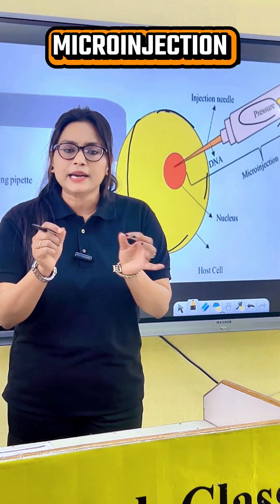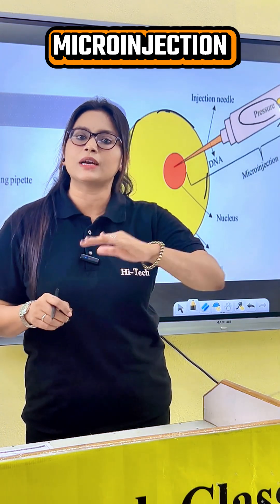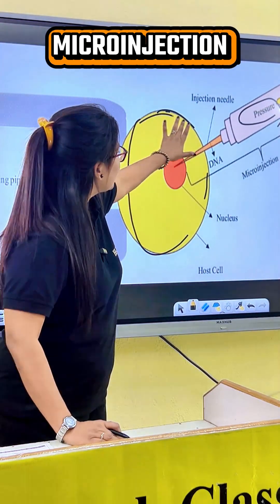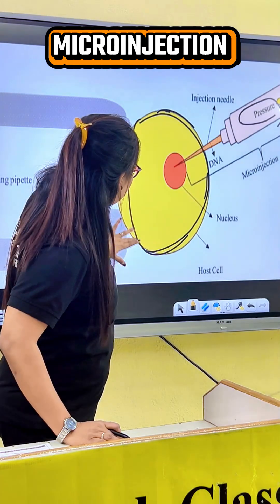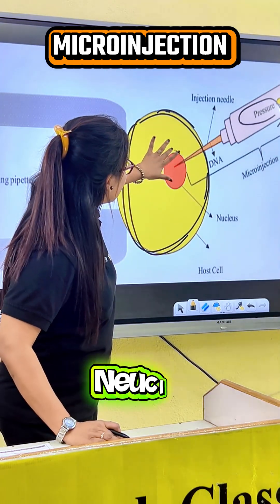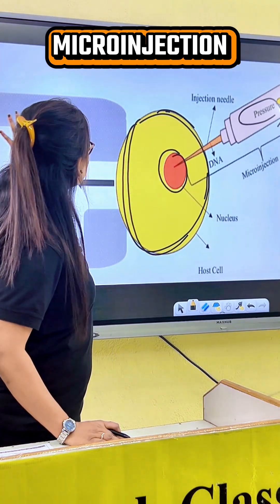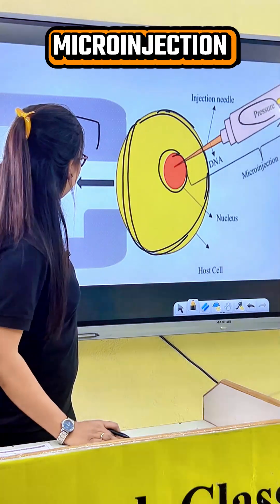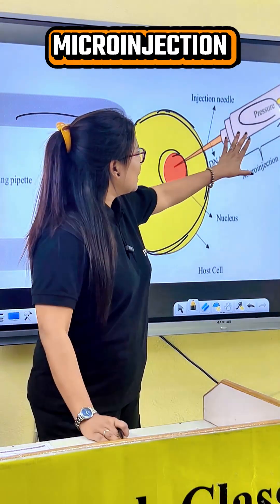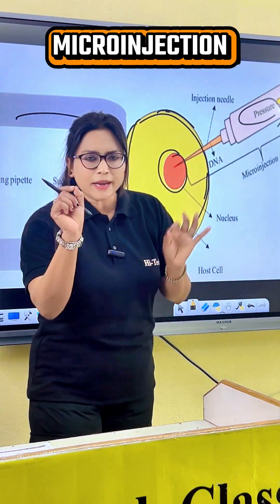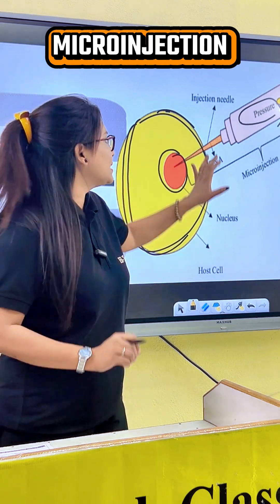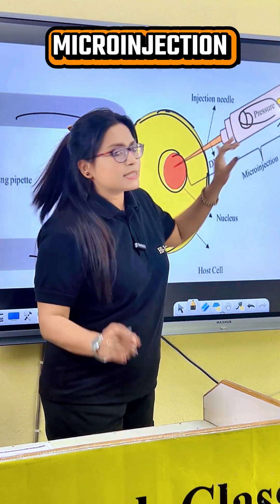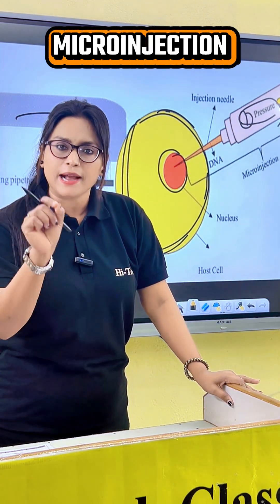We directly transfer the DNA to the target. Look here — this is the cell, and inside this is the nucleus. The cell is held with a holding pipette, and a fine glass microneedle is used. Here we are loading the DNA sample which is to be transferred to the target site.